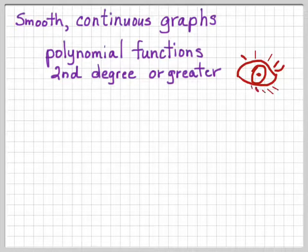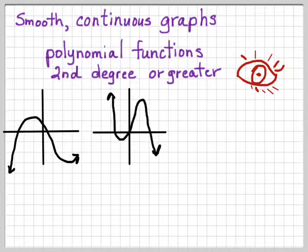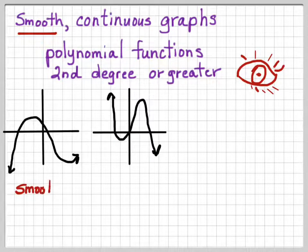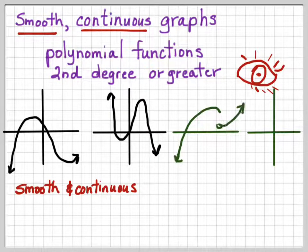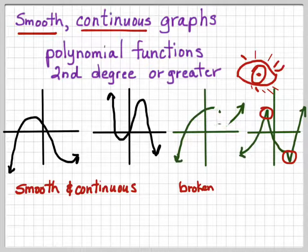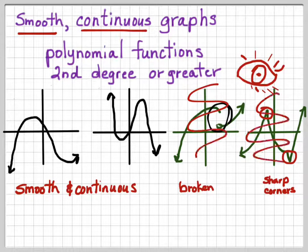We're not going to actually graph these; we're just going to describe what's happening in the graph by looking at the equation. Here are two examples of polynomial functions — second degree or greater — and notice that both have smooth, continuous graphs. There are no gaps, no craggy places, no doubling back on themselves. On the other hand, two other graphs are not polynomial functions because they either have a broken part in them or they have a sharp corner.